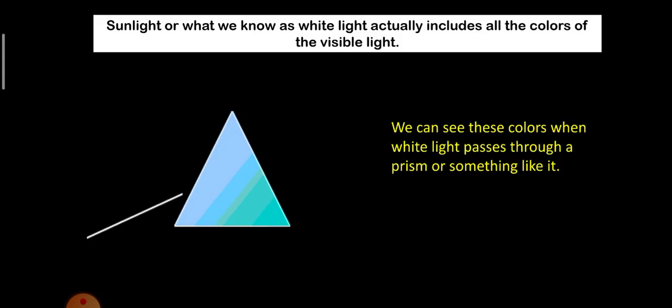Sunlight, or what we know as white light, actually includes all the colors of the visible light. We can see this band of colors when white light passes through a prism or something like that. Let us take a closer look at this band of colors. These are red, orange, yellow, green, blue, indigo, and violet.